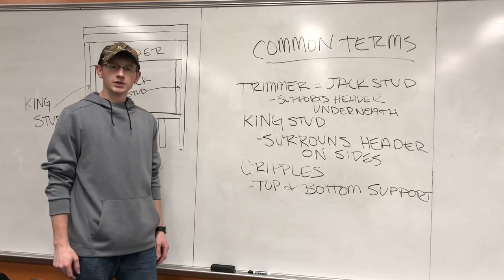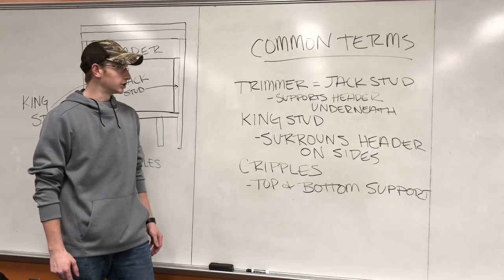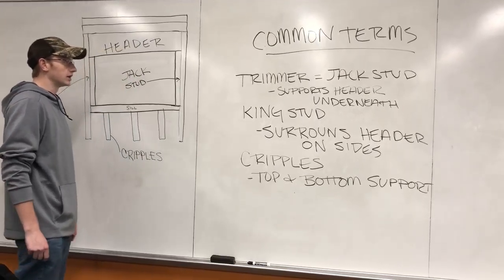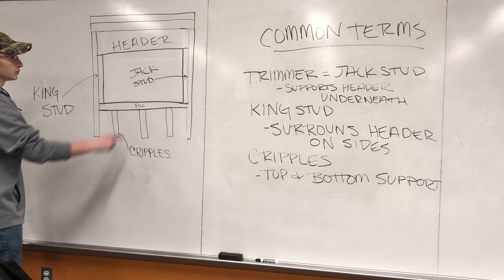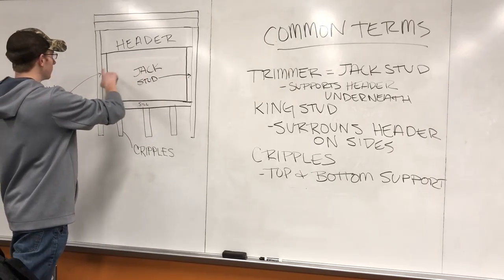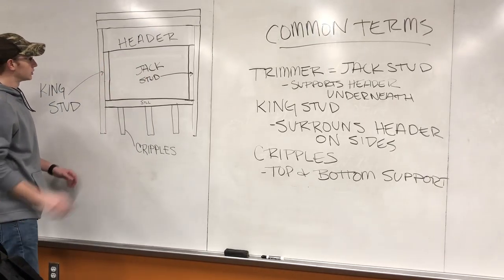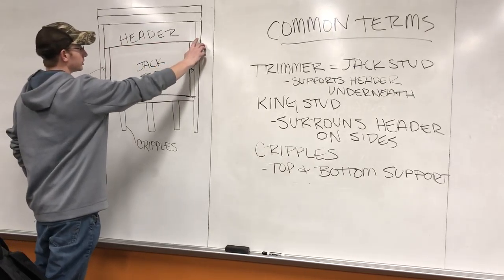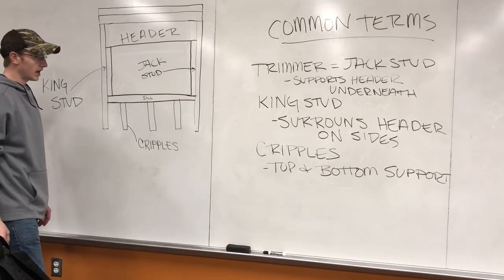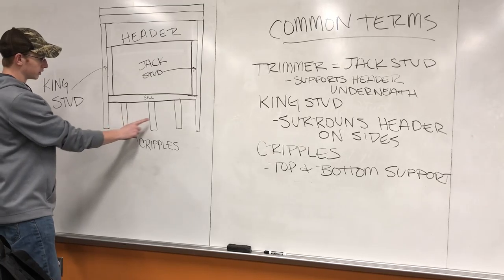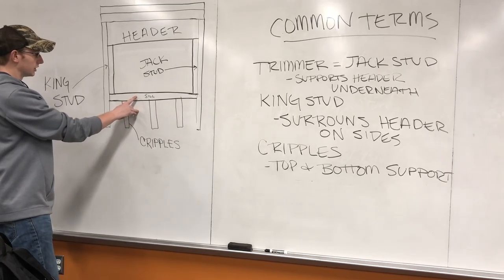Let's talk about some of the common terms you might hear on a construction site in relation to wall framing. The first is the trimmer or jack stud — this is what supports the header from underneath on both sides. The king stud surrounds the header to add extra support. And at the bottom, you have extra support with cripples that sit underneath your sill.